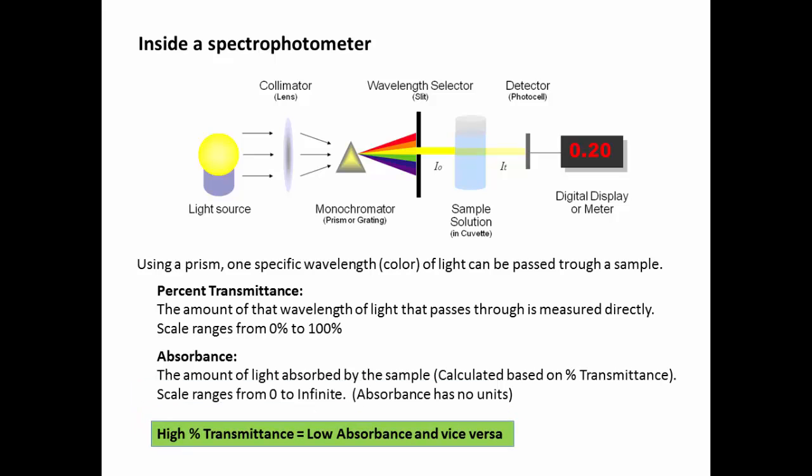The scales run opposite one another. High transmittance values, where lots of light is passing through the sample, is equal to a low absorbance value, less light being absorbed by the pigment molecules, and vice versa. So if you have a low transmittance value, you have a very high absorbance. And we use absorbance as a measure of how much there is inside the test tube of a certain molecule.